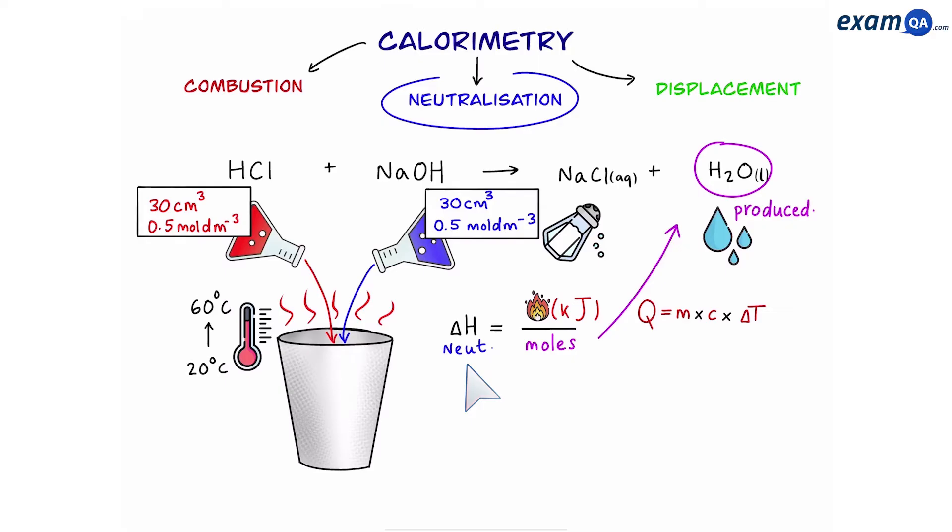So can we work out the enthalpy change of neutralization? To work out enthalpy change the first thing we have to do is work out how much energy was released. So we're going to use q equals mc delta t. Now the m stands for mass of solution. In this case we have a 60 centimeter cubed solution in the polystyrene cup. Now we know that one centimeter cubed of water has a mass of one gram. So if I have a 60 centimeter cubed solution that means it's going to have a mass of 60 grams.